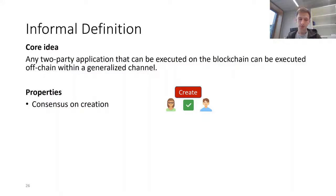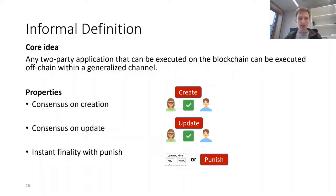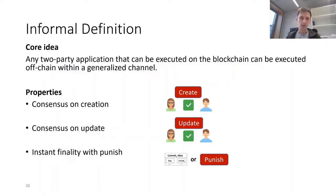The first security property is consensus on creation: if two parties have a generalized channel, both must have agreed to its creation—a malicious party cannot open a channel without the honest party's agreement. The second property, consensus on update, means a channel can only be updated if both parties agree. The third property is instant finality with punish: an honest party has the guarantee that the latest state can always be enforced on the blockchain, or if not possible due to malicious behavior, the honest party can always punish the malicious party.